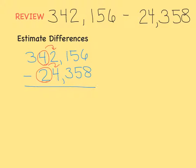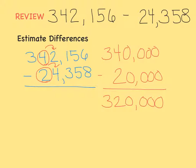The top number rounds to 340,000. The bottom number rounds to 20,000. When we round these numbers, it makes it very easy for us to do it in our heads. 340,000 minus 20,000 equals 320,000. Later when we find the actual answer, we know that it should be about 320,000.